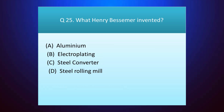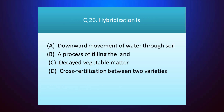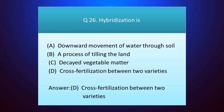Question number twenty-five: what did Henry Bessemer invent? Your time starts. The answer is option C — steel converter. Question number twenty-six: hybridization is — your time starts. The answer is option D — cross fertilization between two varieties.